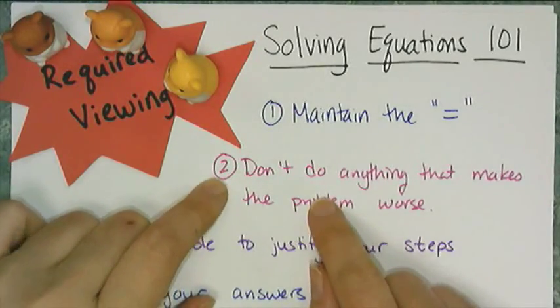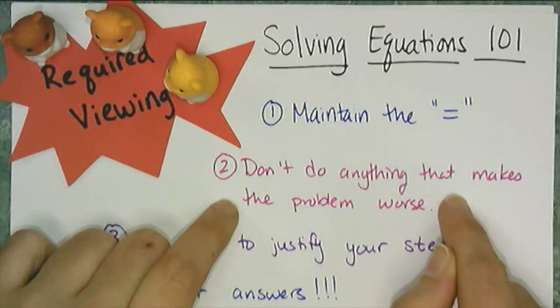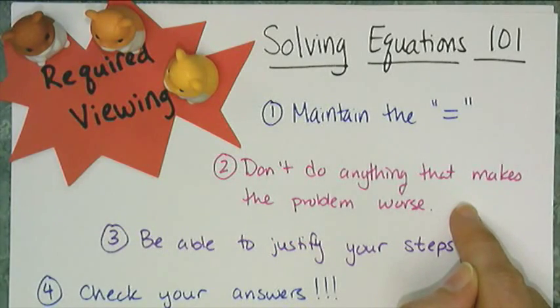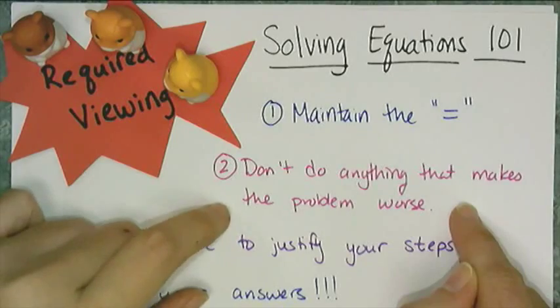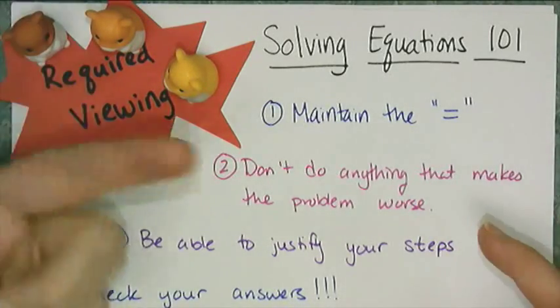Second thing, and you'd think I wouldn't have to say this, but don't do anything that makes the problem worse. You can do whatever property of equality you want to an equation. If you wanted to, you could add pi to both sides. However, adding pi to both sides would make things worse. So why do it?